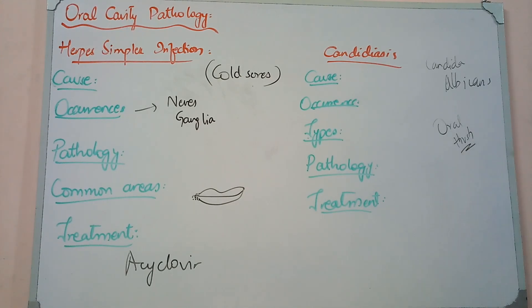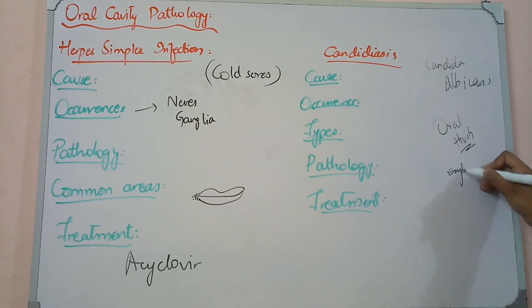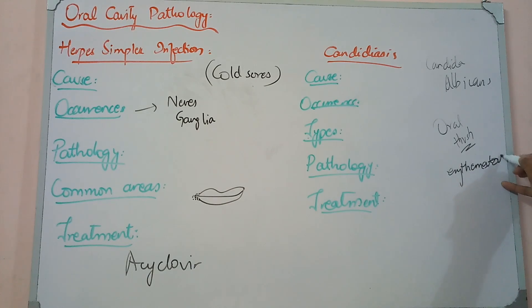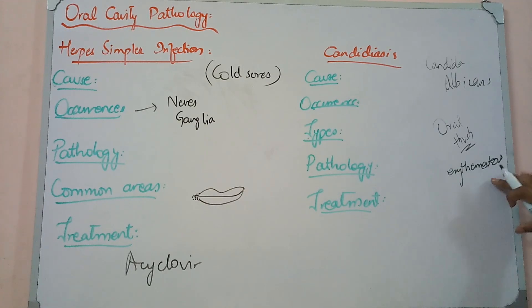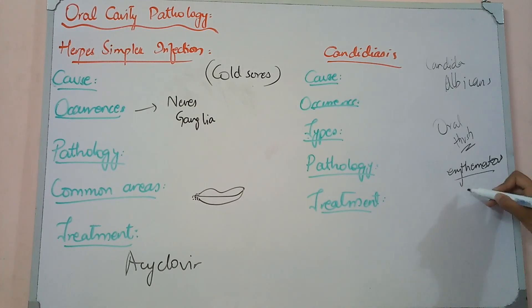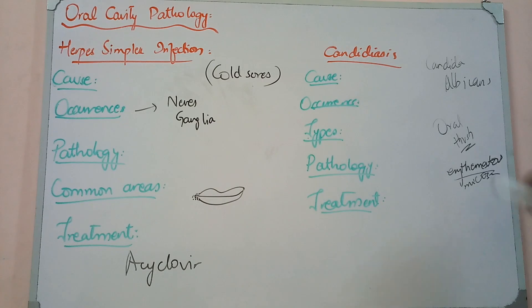Oral thrush presents with white plaques in the oral cavity. When you scrape these plaques off, it reveals erythematous mucosa underneath. Remember — compare this with diphtheria: diphtheria's membrane bleeds when removed, but oral thrush white plaques do not bleed when scraped off.